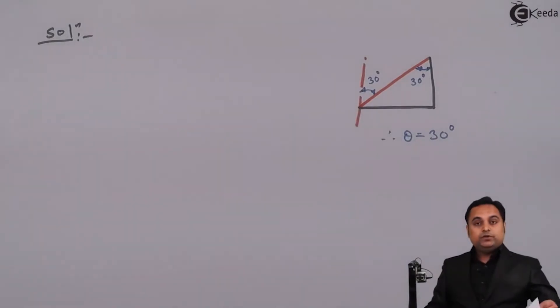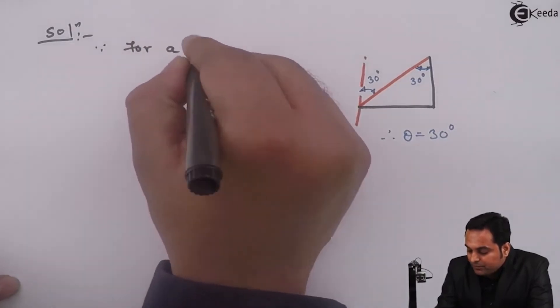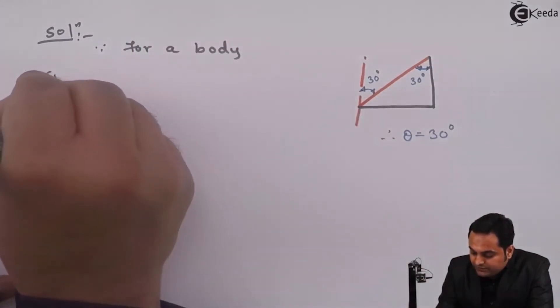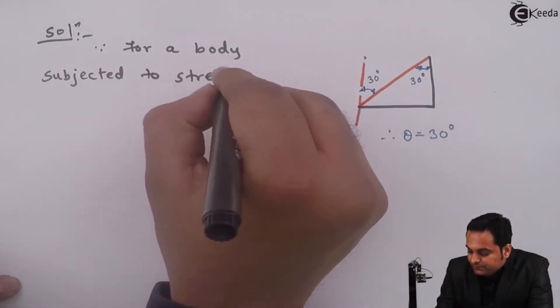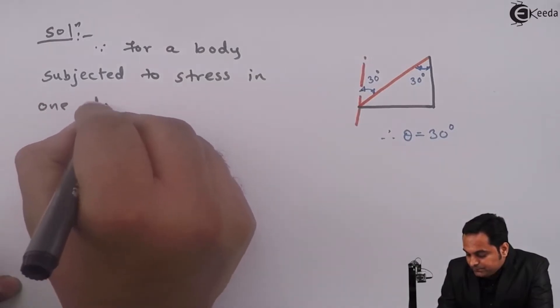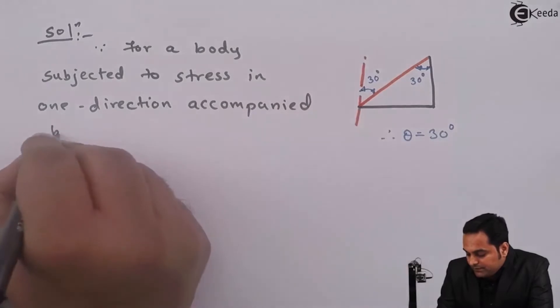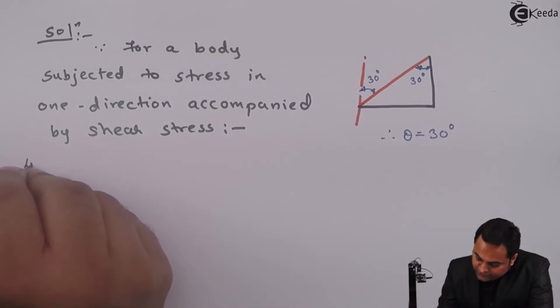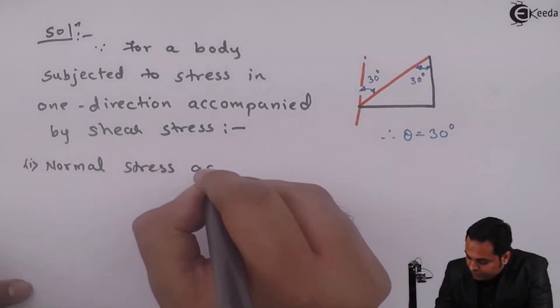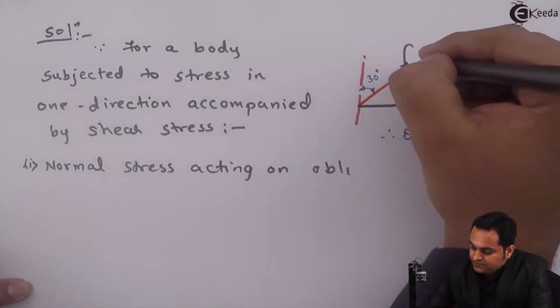So now once we know the angle, we can start solving the problem. I'll write that: since for a body subjected to stress in one direction accompanied by shear stress, normal stress is acting on oblique plane, which is the plane here, this is the oblique plane.